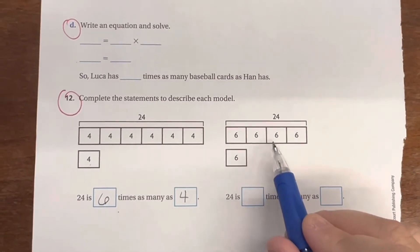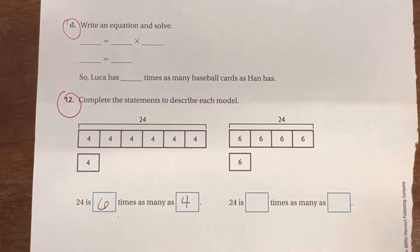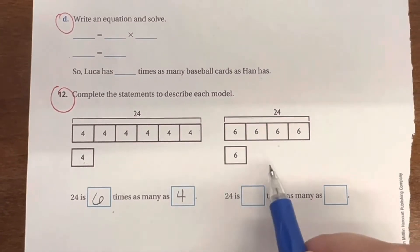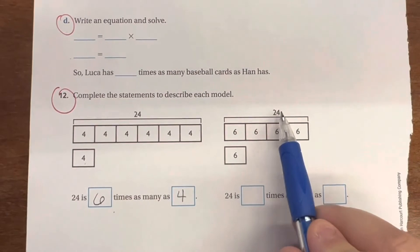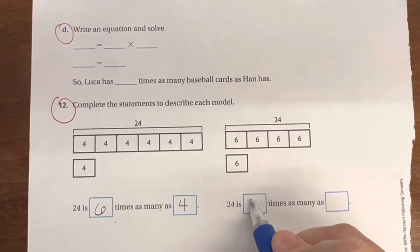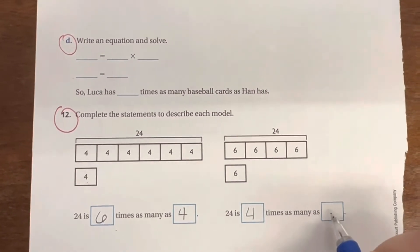In this one, it is commutative, so we know that the order doesn't change the results, but it is different numbers, right? So now, 24 is actually 1, 2, 3, 4 times as many as 6.